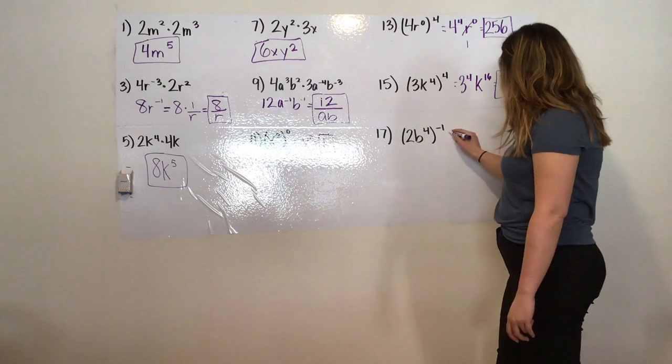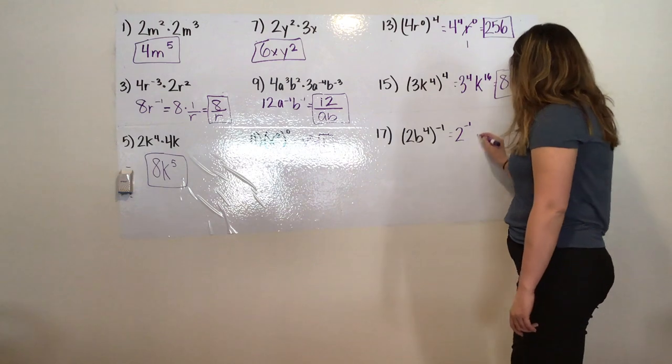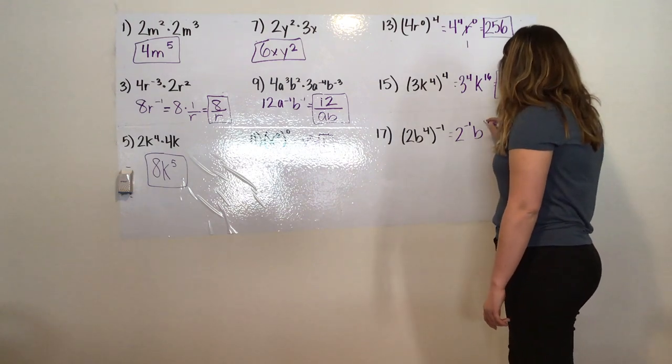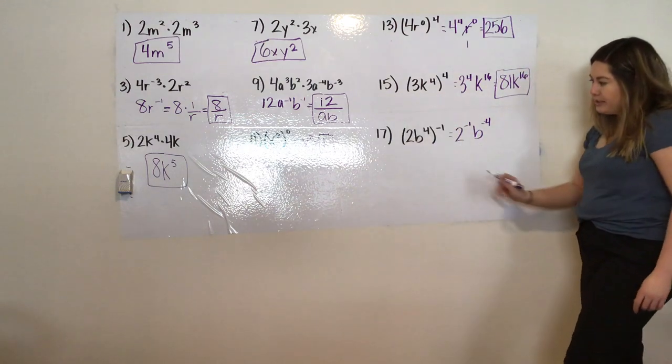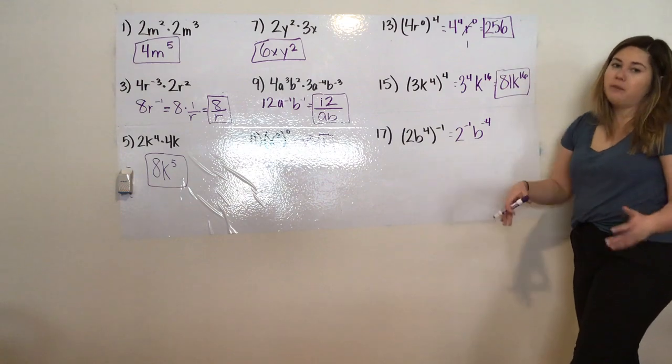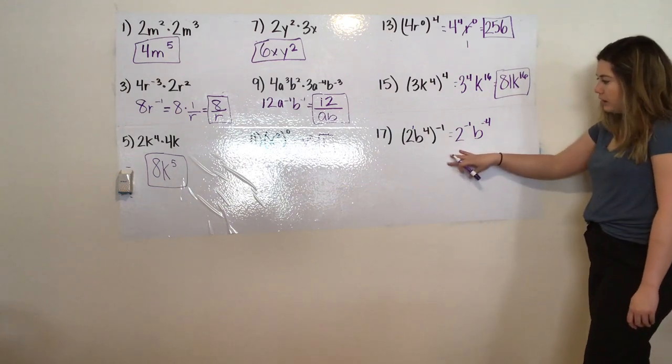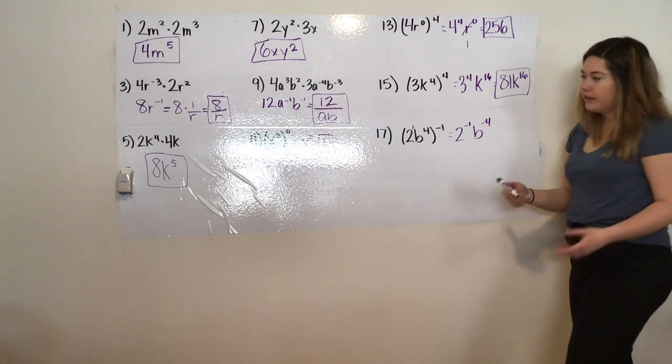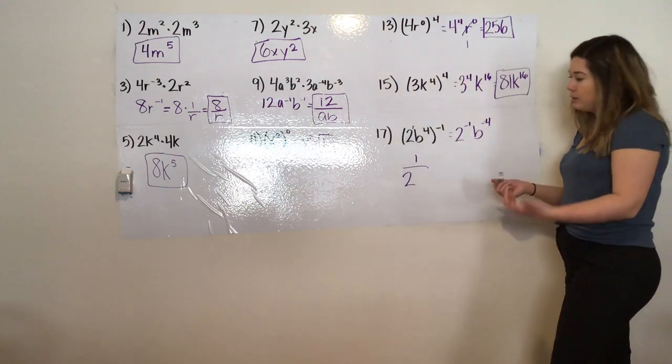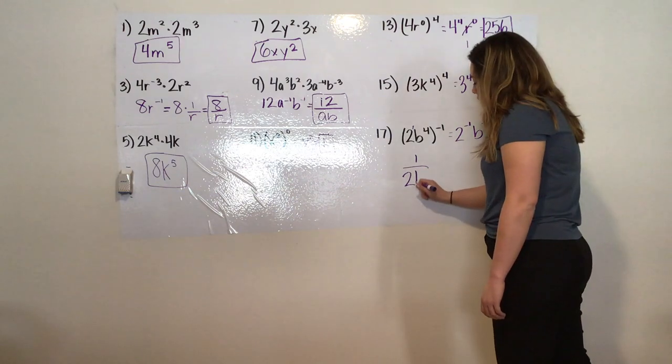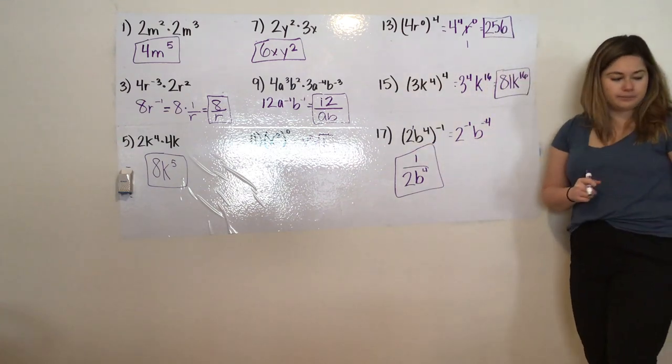This next one, same thing, we're still dealing with the power rule. So now I have 2 to the power of negative 1 times b to the power of negative 4, because I'm multiplying with powers. If you see anything that doesn't have a power, you're going to assume it's just 1, because anything to the power of 1 is itself. So now I know 2 to the power of negative 1 is 1 half, and then b to the power of negative 4, same thing as that reciprocal, so it's b to the power of 4, and that's the answer.